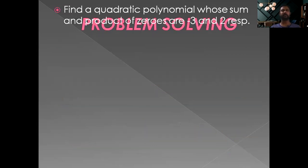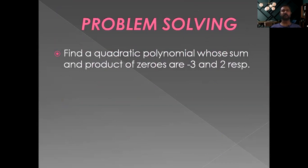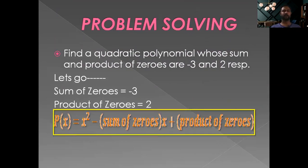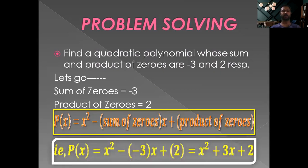Find a quadratic polynomial whose sum and product of zeros are minus 3 and 2 respectively. Substituting into the formula: P(x) equals x square minus (minus 3)x plus 2, which simplifies to x square plus 3x plus 2.